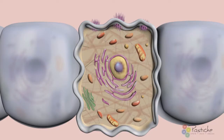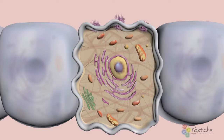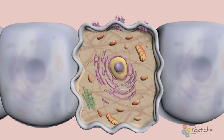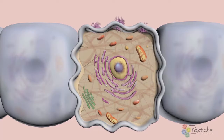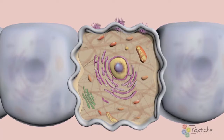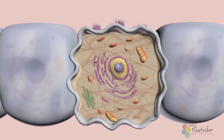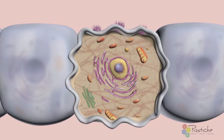The basal cell layer, responsible for cellular regeneration, is situated above the dermal-epidermal junction, separating the epidermis from the dermis. As the keratinocytes of the basal layer move upward into the spinosum layer, their cell shape changes from cuboidal to polyhedral.